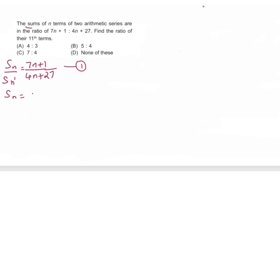We know that Sn formula is n by 2 into 2a plus n minus 1 into d. This is the general formula. So we have two Sn. We will write Sn and Sn dash as n by 2 times 2a1 plus n minus 1 into d1 divided by n by 2 into 2a2 plus n minus 1 into d2. Now this will get cancelled.